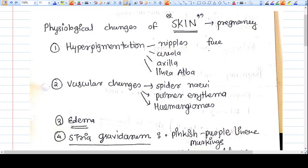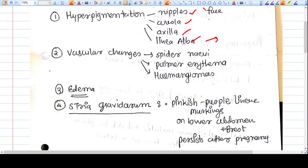Areas like nipples, areola, axilla, linea alba which will be called linea nigra. Now because of the estrogen there are vascular changes, and because of those vascular changes spider naevi is there, palmar erythema is there, hemangiomas can also develop.